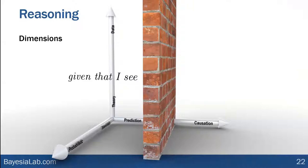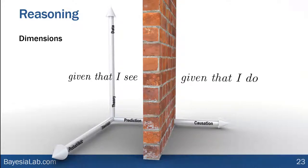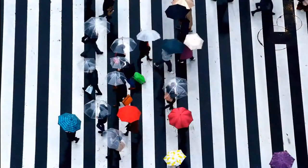A good way to think about these two sides is as follows. On the left side, we perform inference in the sense of 'given that I see' — I predict. On the right side, I infer 'given that I do' — I want to see the consequence of an action that I perform. Let me give you a silly example to make sure we're all on the same page.